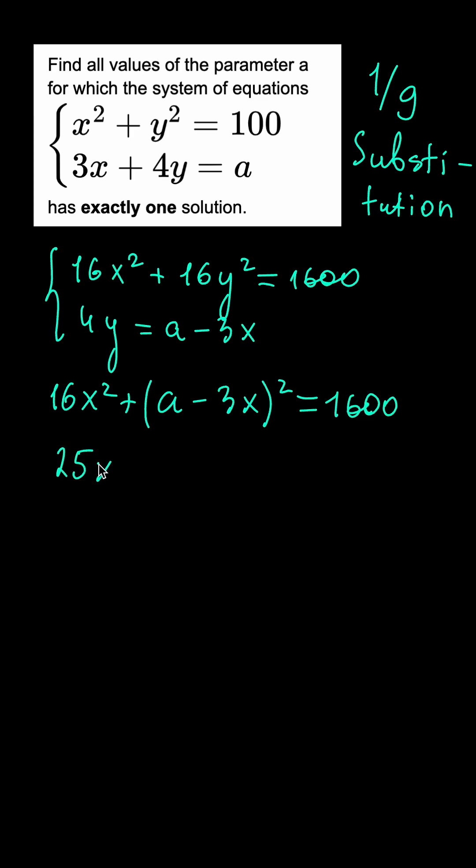Let's write down this quadratic equation like that and now we want it to have exactly one solution which means that its discriminant should be equal to zero. The discriminant is minus 6a squared minus 4 times 25 times a squared minus 1600.